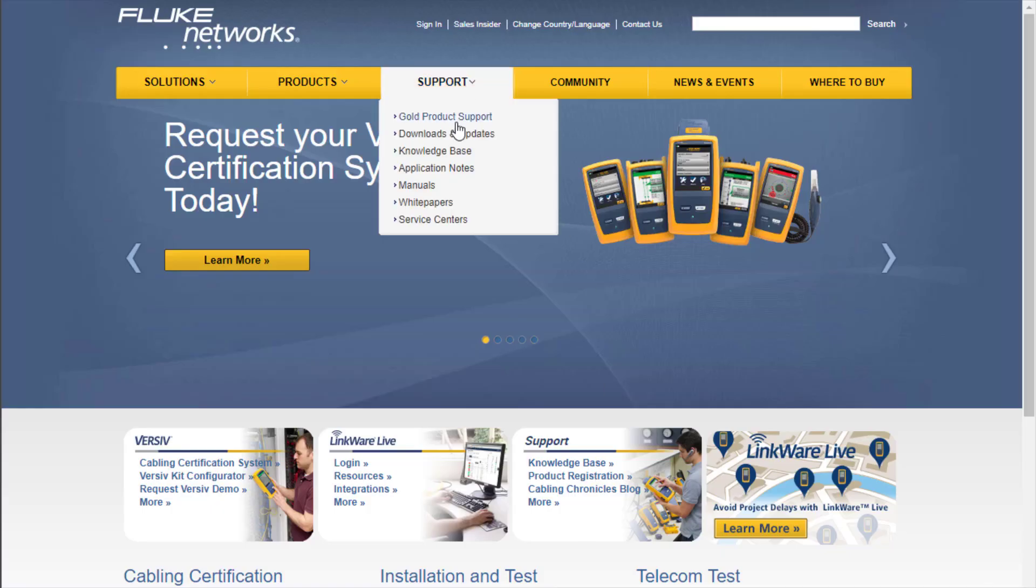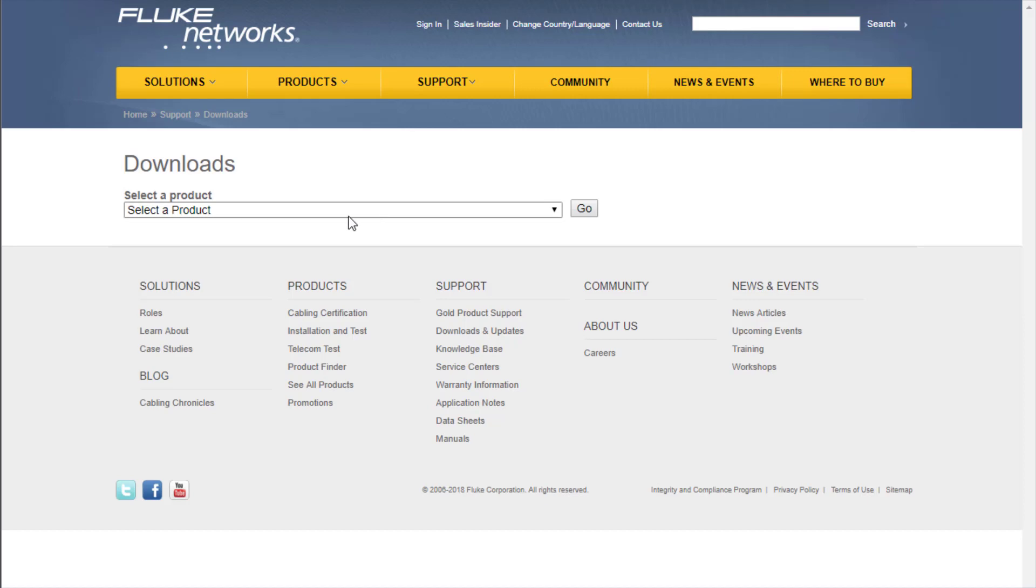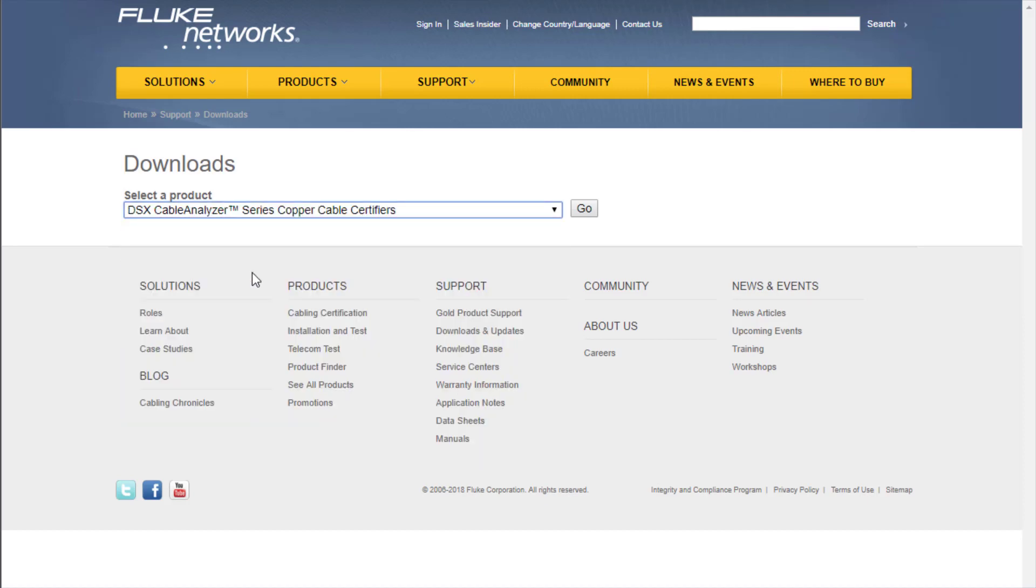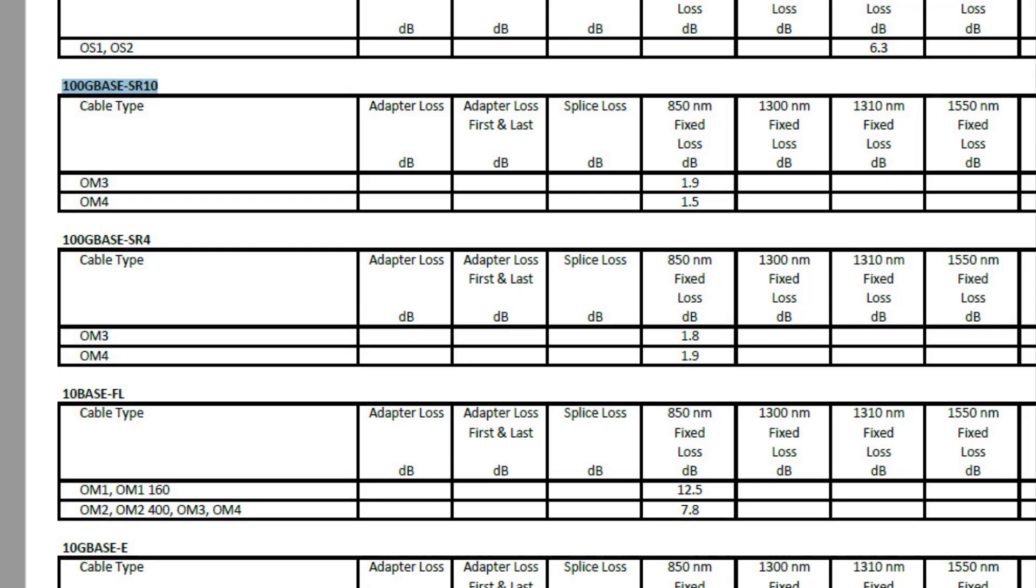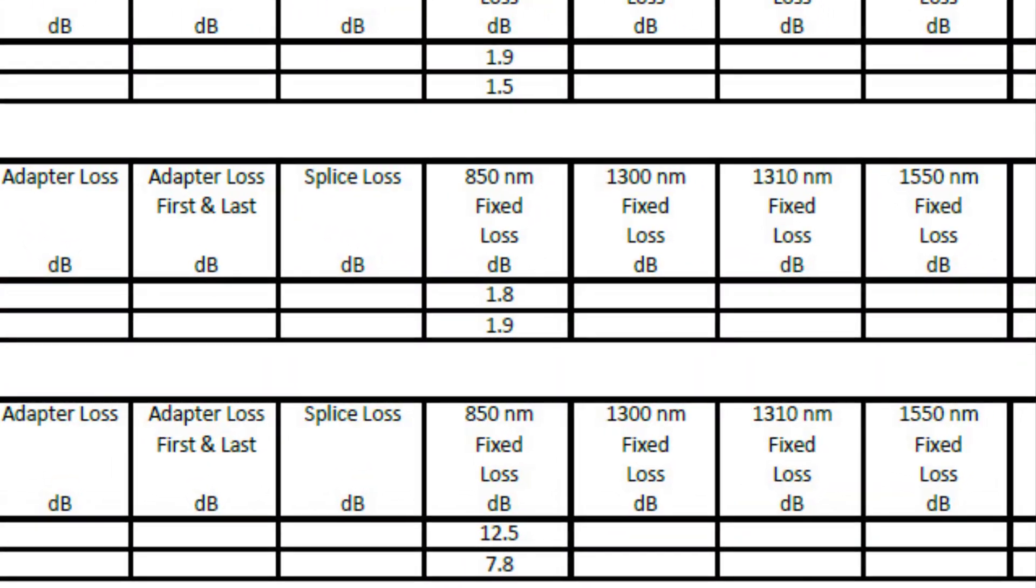We'll be testing this MPO trunk cable to ensure it will support a 100G base SR. We know the fiber we're using is OM4. Now we can go to the Fluke Network's website and find the limit lines. This document shows us the maximum allowable loss based on the application and the fiber type. In this case, we can see that the maximum loss for a 100G base SR over OM4 fiber is 1.9 dB. Before we run the tests, I will set the loss limit on the light meter.